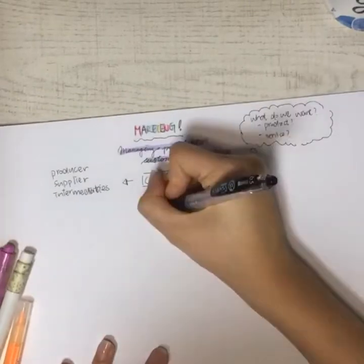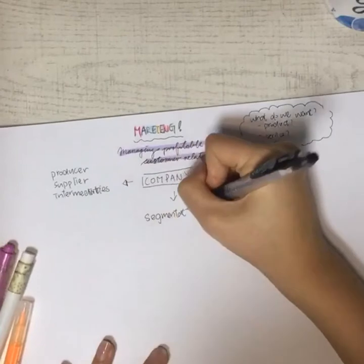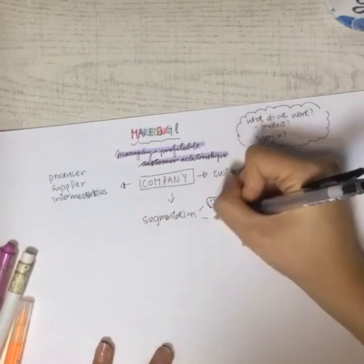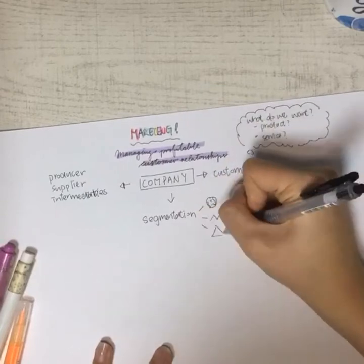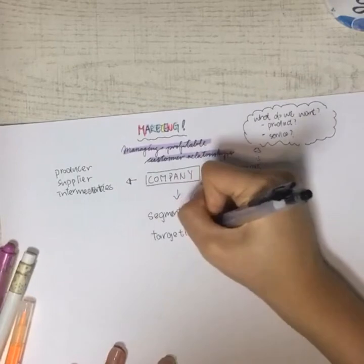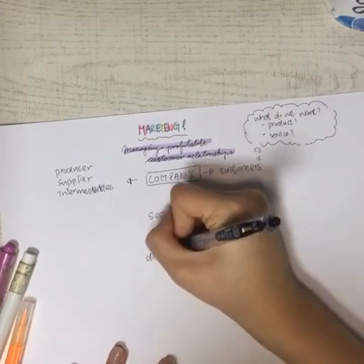Like if you're a Tonki dim sum shop in the university station, who will be the segmentation of your target customers? Of course, it will be the people who pass by the university station and then buy the dim sum.